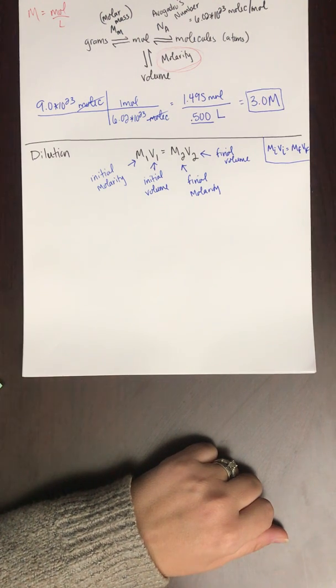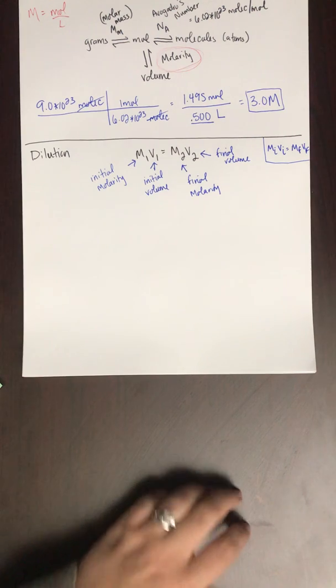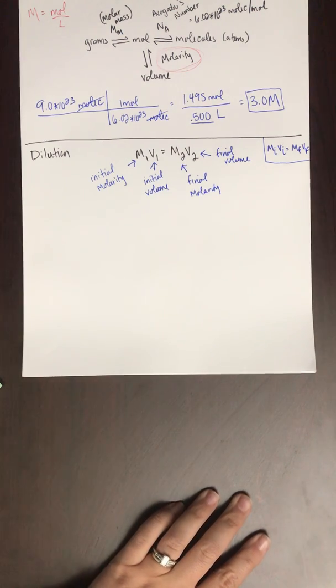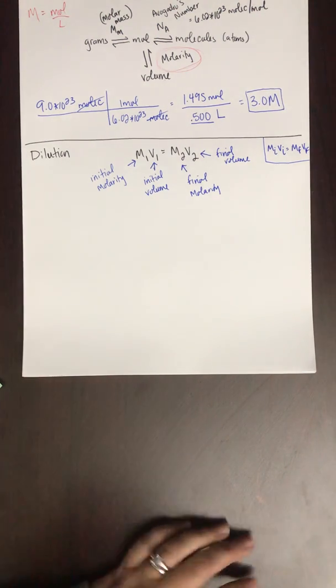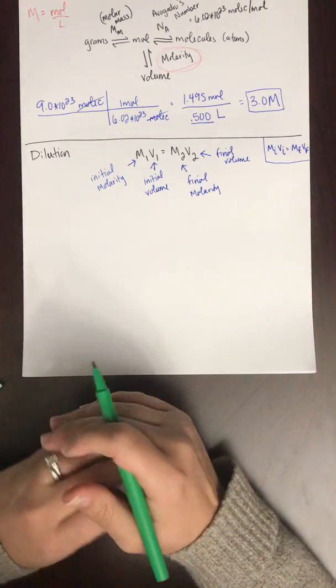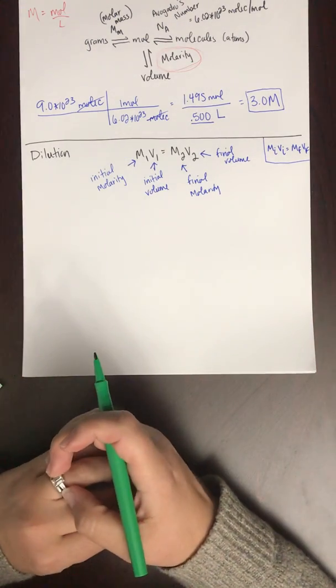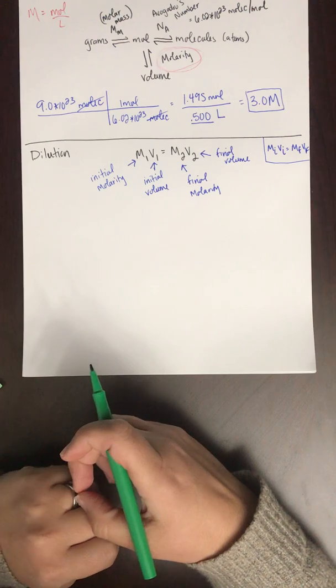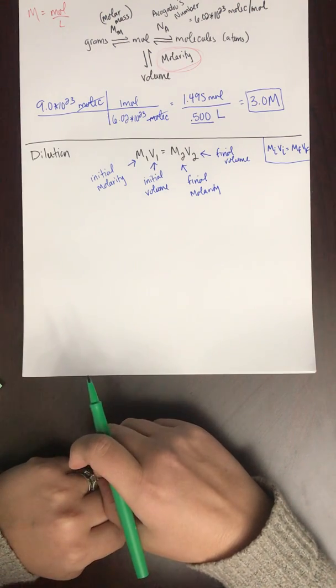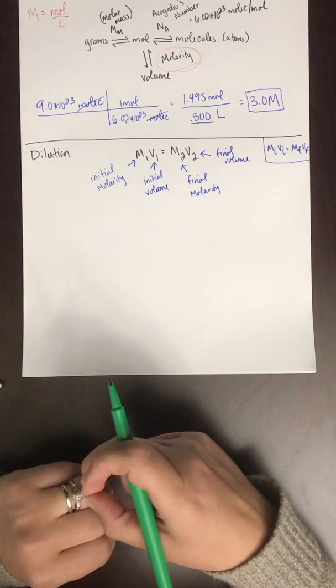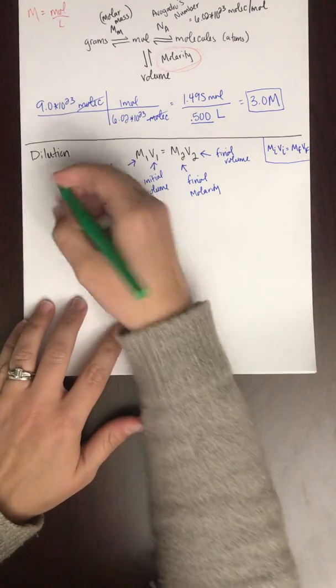Okay, so whenever you are solving for a dilution problem, you're going to be given three of these four terms and you're just going to solve for the fourth. So let's look at an example of how that would read. It's going to say if 25 milliliters of water is added to 125 milliliters of a 0.15 molar sodium hydroxide solution, what is the final molarity?